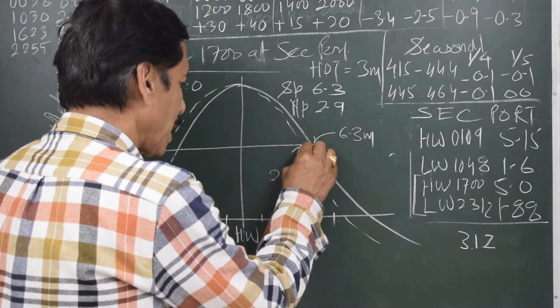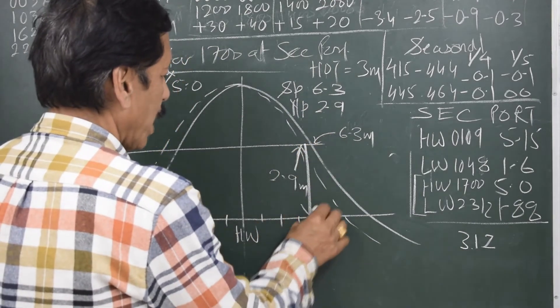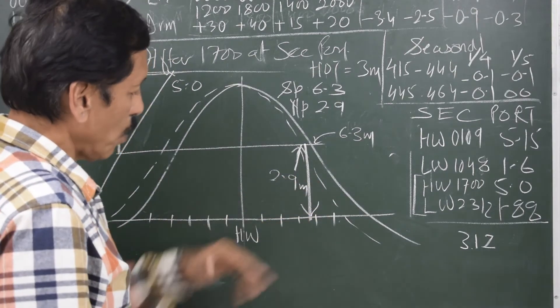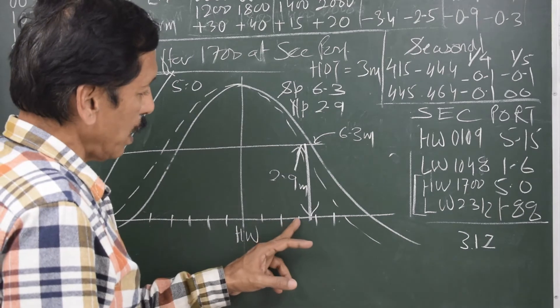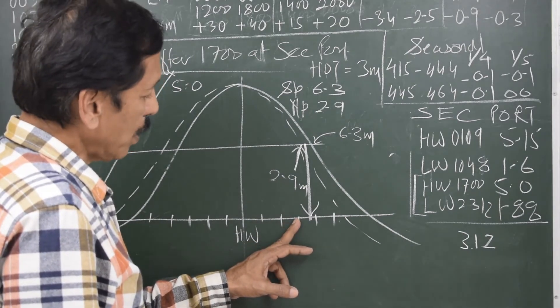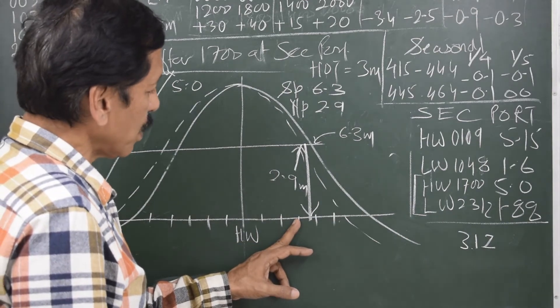So when I come down, I find the line, the vertical line, touching the horizontal axis at 1, 2, 3, about 3 hours and 45 minutes or 3 hours and 40 minutes after high water. 3 hours 40 minutes after high water.